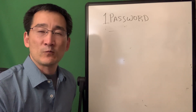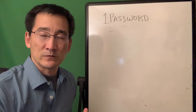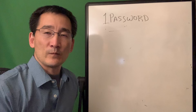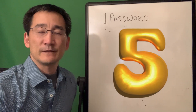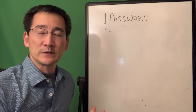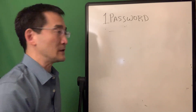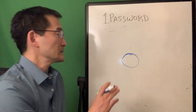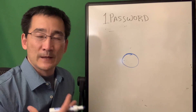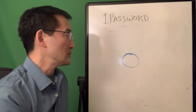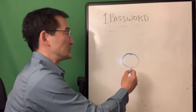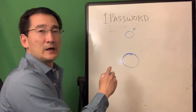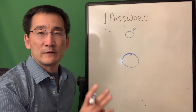When you get a 1Password family account or purchase that package, you get five accounts. What that consists of is an owner — if you're the person that starts it all up, you are the owner. You're allowed to have five separate private vaults. If this is the main account, you have a personal vault, and then you can have up to four other people in it.